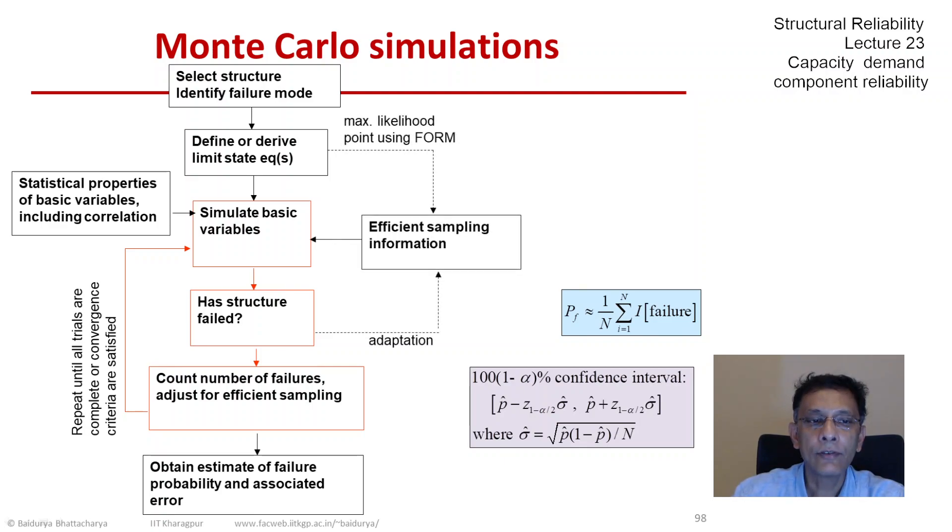You could have another side loop there where we could use efficient sampling information, which is something we are going to look at in the next lecture. So we could enhance this direct Monte Carlo or basic Monte Carlo or brute force Monte Carlo method by bringing in efficient sampling information, which could be biased sampling like importance sampling or adaptive sampling.